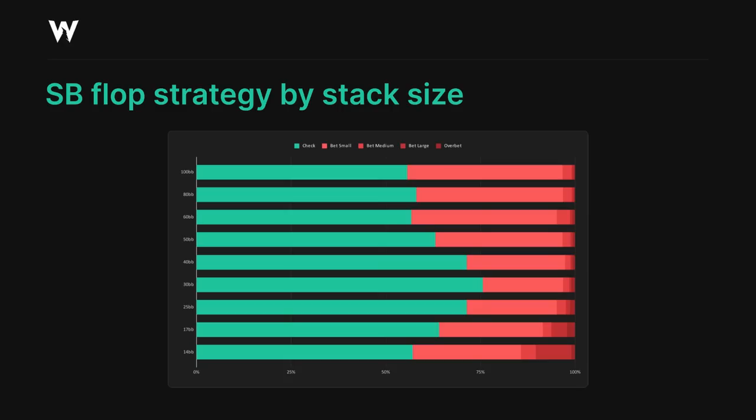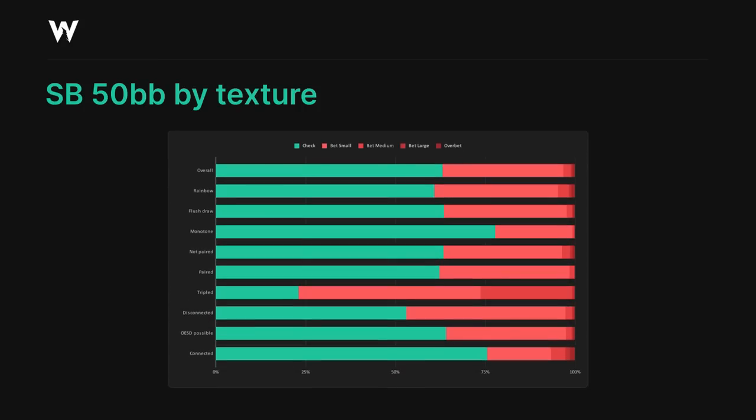This does alter a little as stacks get shallower, but that's mostly because the big blind's checking behind range is getting weaker overall. To analyze overall board textures, I've used 50 big blinds as an example since it's a middling stack size.